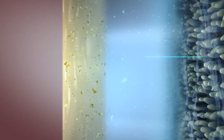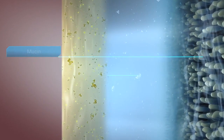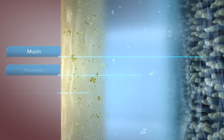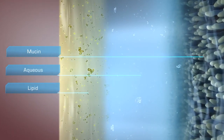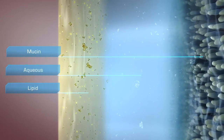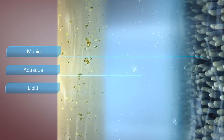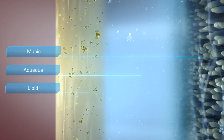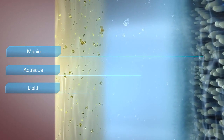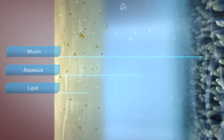The primary components of tears — mucin, aqueous, and lipid — combine to create a complex viscoelastic structure. This complex structure is responsible for a multitude of important functions.